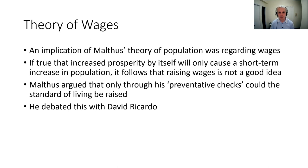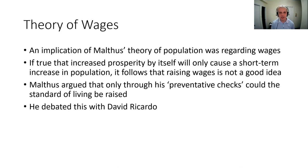An implication of Malthus's population theory concerns wages. If increased prosperity just short-term increases population, then if you're the government considering policy options, raising wages is not a good idea — it just gives people money they spend on having more children. Instead Malthus suggests preventative checks: stop people from hurting themselves through bad decision making, and give people — as the neo-Malthusians argue — access to birth control.